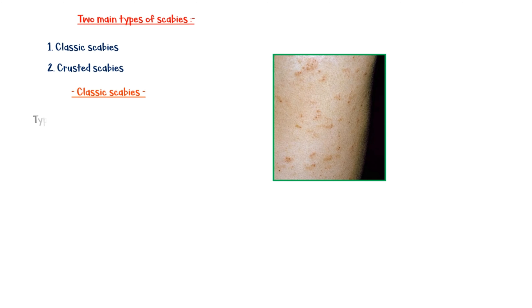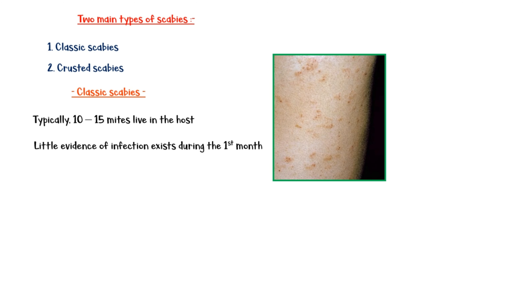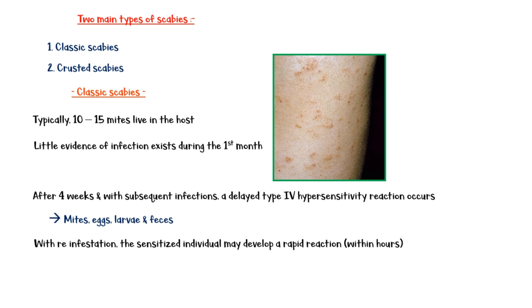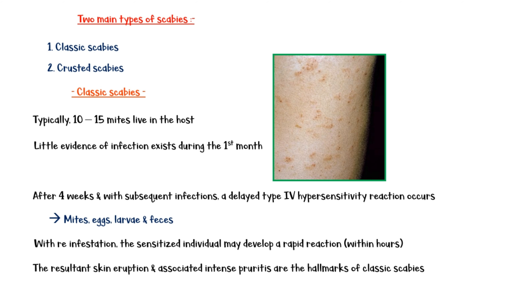There are two main types of scabies: classic scabies and crusted scabies. Classic scabies is the predominant type, and typically 10 to 15 mites live in the host. There is little evidence of infection during the first month; however, after four weeks, and with subsequent infections, a delayed-type hypersensitivity reaction occurs against mites, eggs, larvae, and feces. With reinfestation, the sensitized individual may develop a rapid reaction. The resultant skin eruption and associated intense pruritus are the hallmarks of classic scabies.